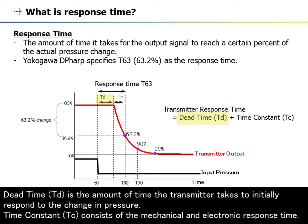Dead time, Td, is the amount of time the transmitter takes to initially respond to the change in pressure. Time constant, Tc, consists of the mechanical and electronic response time.